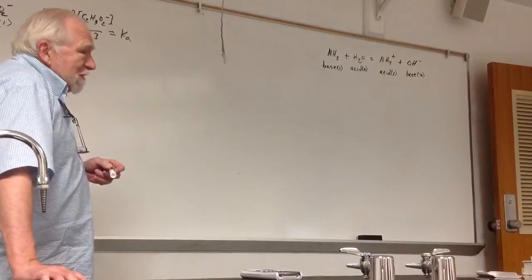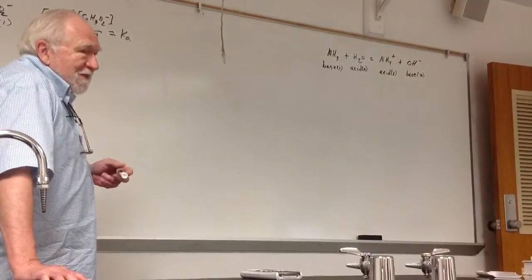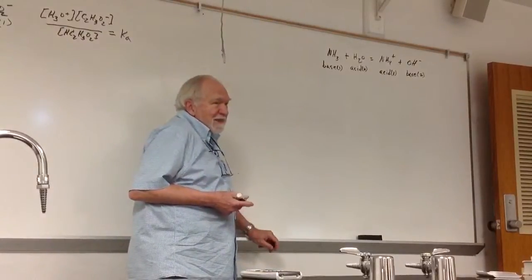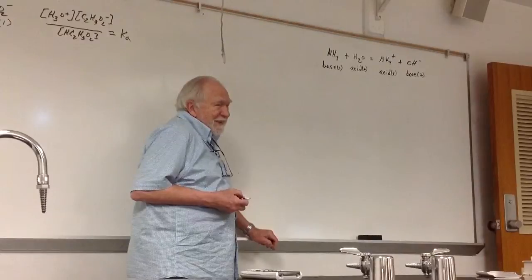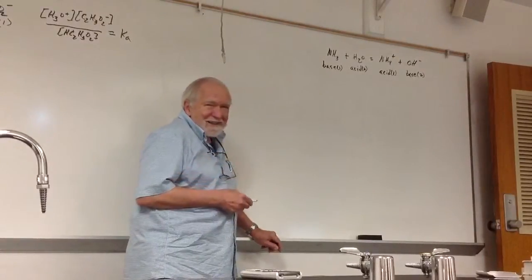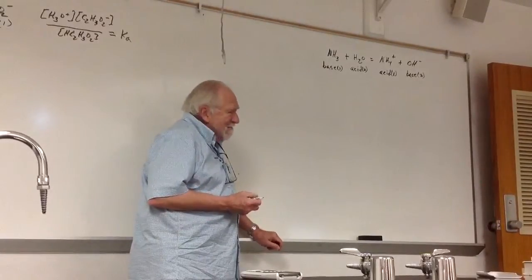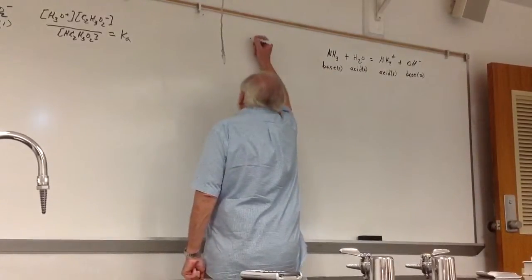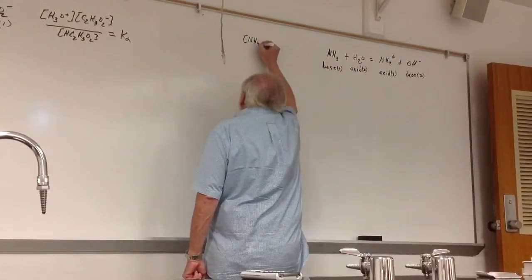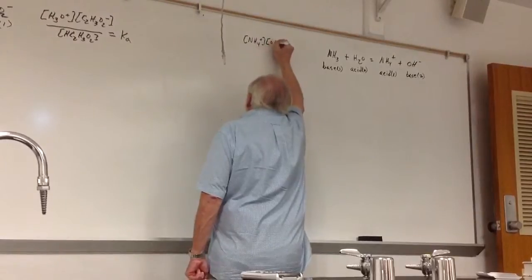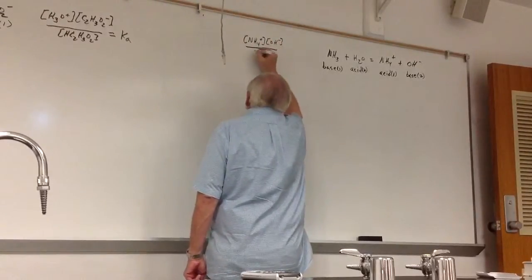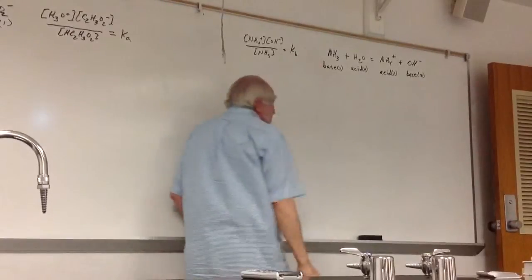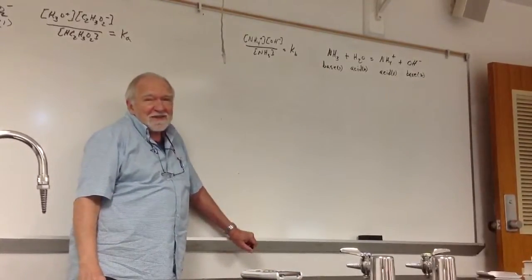Let's write the equilibrium expression. Yes? I'm just a little confused, why is the H2O acid? And over there it's the base? Good question, I'm going to come back to that in just a minute. So first of all, let's write the equilibrium expression. Again, we're not going to put in the water. And we call that a Kb, a base dissociation constant.